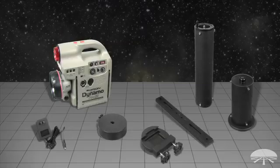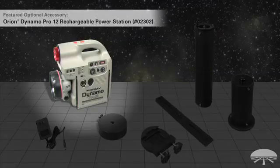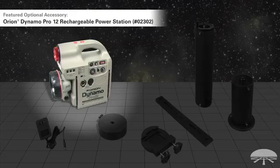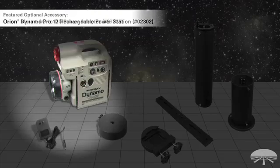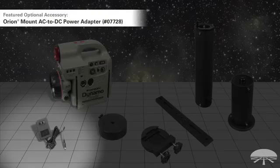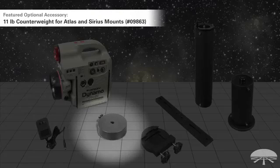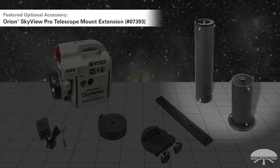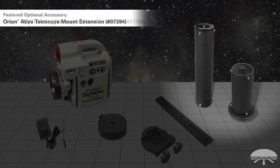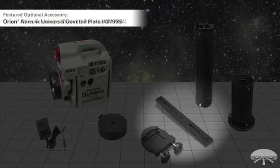So here we've got some of the suggested accessories for both mounts. The Dynamo Pro, a good rechargeable battery for when you're out in remote locations. The AC adapter when you're in the backyard and you've got access to a wall outlet. An 11 pound counterweight, if your scope is a little bit too heavy you can add on one or more counterweights. The pier extension tubes, we've got a 16 inch for the Skyview Pro and the Sirius mount. And the 8 inch extension tube there is for the Atlas mount.